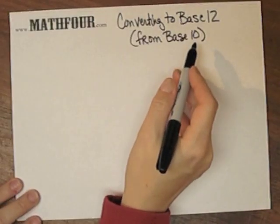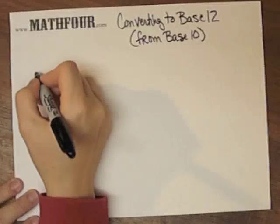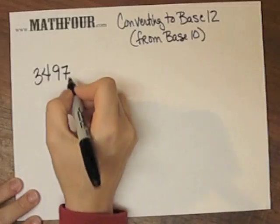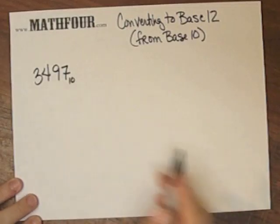This is how we convert to base 12 from a base 10 number. Our number is 3497. I'm going to put a little base 10 here.